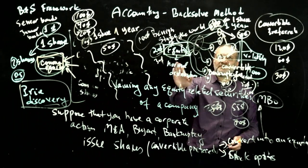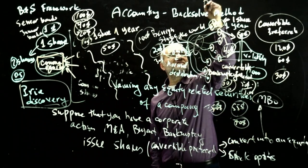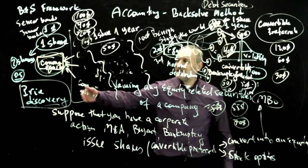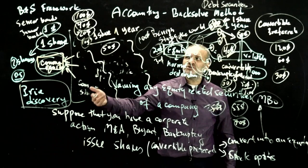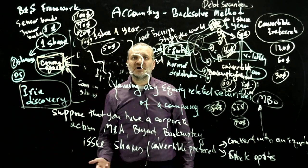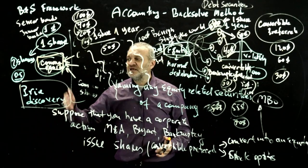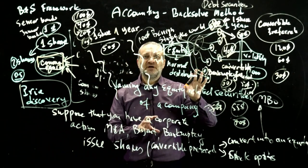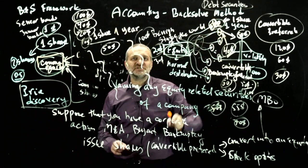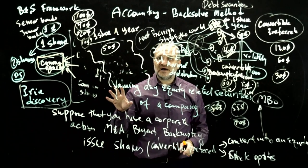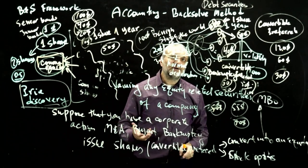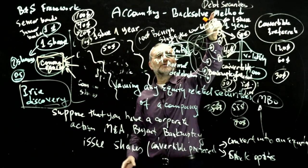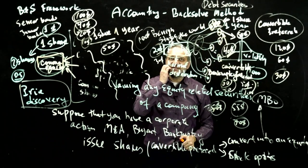One thing this method doesn't currently account for is debt securities. If you issue a lot of debt, your equity price will drop dramatically. I'll discuss incorporating debt securities into this framework in the next video — the same analysis can handle it, but it's not part of the current official accounting guidance.